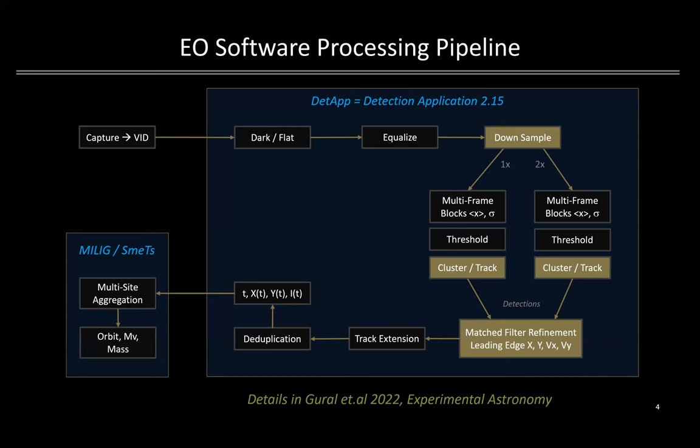Given the new sensor hardware and the high quality imagery it produces, a new detection application, or dead app for short, was developed to fully exploit the camera sensitivity. Existing capture and video data archiving software feeds a pre-processing module that down samples the imagery to various levels, so that an extremely fast clustering and tracking module, or blob detector, can meet the latent but real-time first stage detection timing and performance requirements. Those detections are then fed into a match filter for false alarm mitigation and leading edge position measurements for each video frame. Post-processing metric data are then sent to existing multi-site aggregation, trajectory and orbit estimation applications.